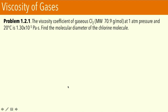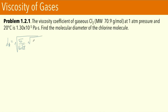Let's apply this equation to a problem. We're given the viscosity coefficient of chlorine gas at given conditions and want to calculate its molecular diameter. The equation is d_A = √[(5/16) × √(πMRT/(N_A·eta))]. This looks like a plug-and-play situation, but we have to be careful about units. We need SI units, so our final answer must be in meters.